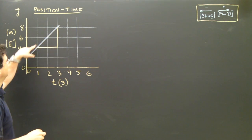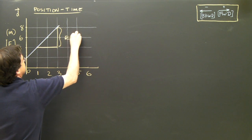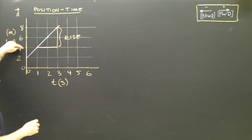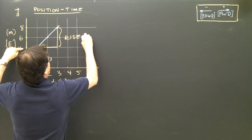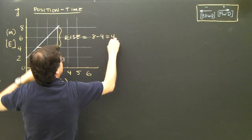For that triangle, I need to find this side, which is called the rise. And I calculate the rise by going over here, and I say it's this number minus this number. So, my rise is going to be 8 minus 4, which is 4.